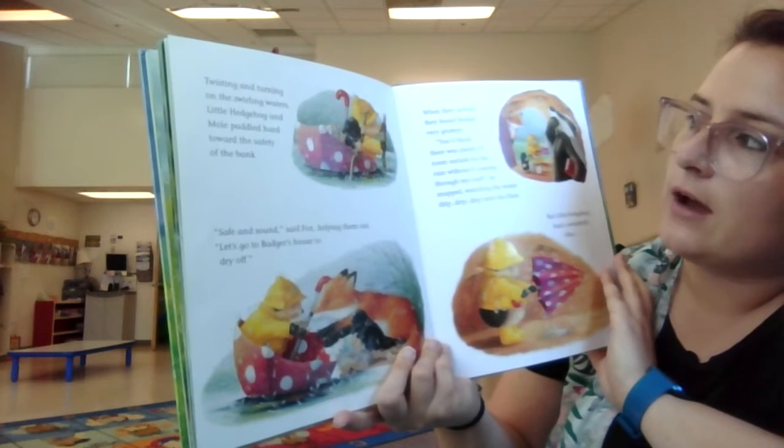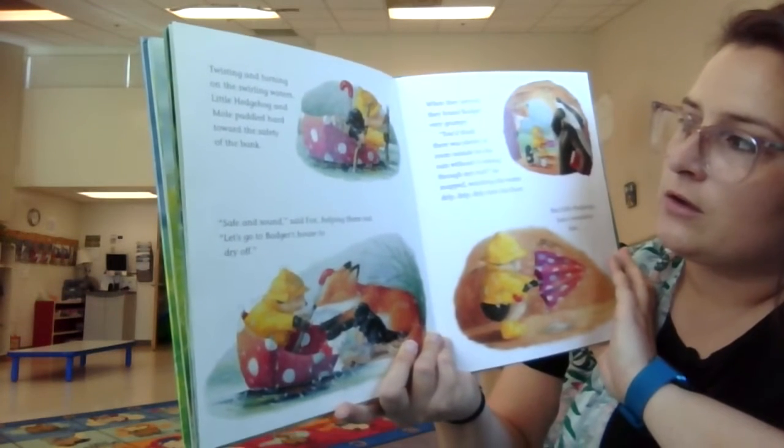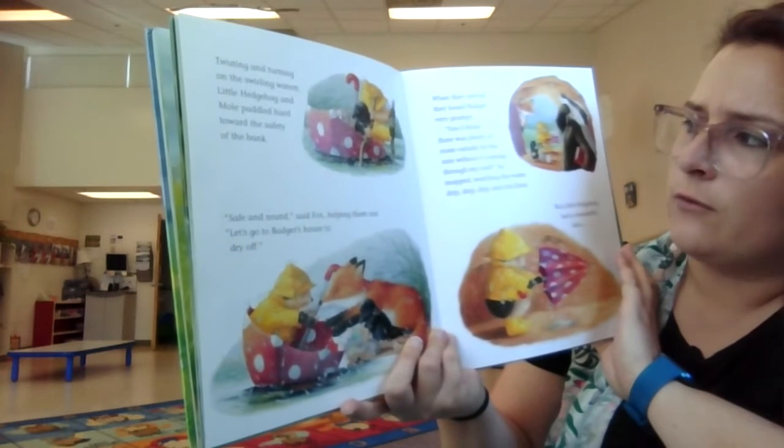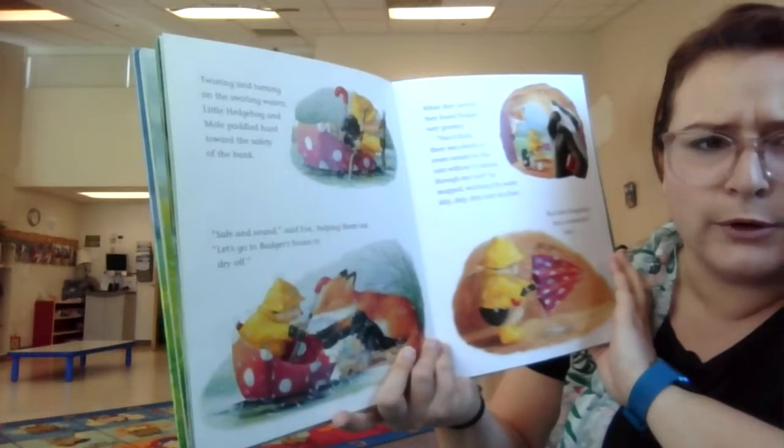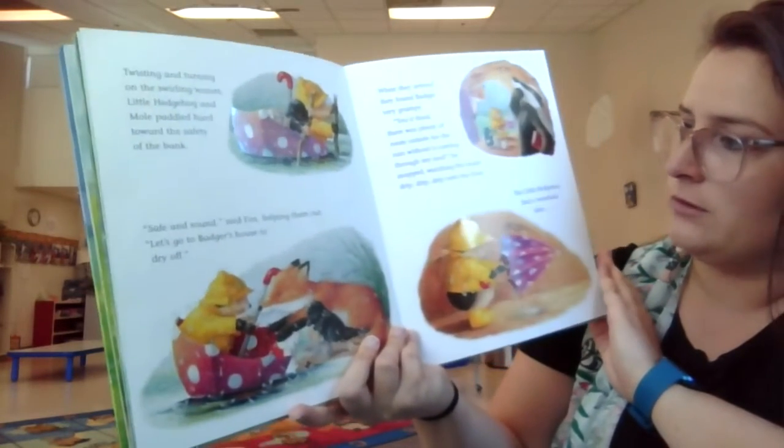When they arrived, they found Badger very grumpy. You'd think there was plenty of room outside for the rain without it coming through my roof. He snapped, watching the water drip, drip, drip from his roof to his floor.